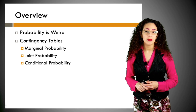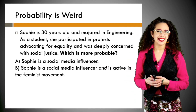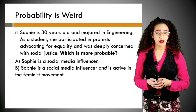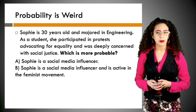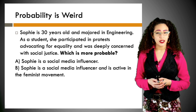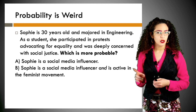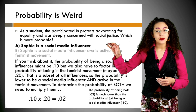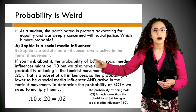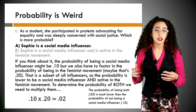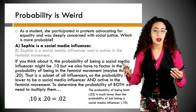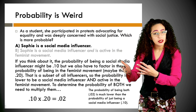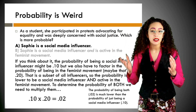Probability is kind of weird — let's investigate. Sophie is a 30-year-old who majored in engineering. As a student she participated in protests advocating for equality and was deeply concerned with social justice. Which is more probable: Sophie is a social media influencer, or Sophie is a social media influencer and is active in the feminist movement? It's really option A, because being a social media influencer is one thing — that's a subset — and adding the feminist condition makes it even rarer.